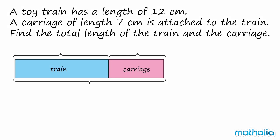Let's use a model to help us find the answer. We know the toy train has a length of 12 cm and the carriage has a length of 7 cm.